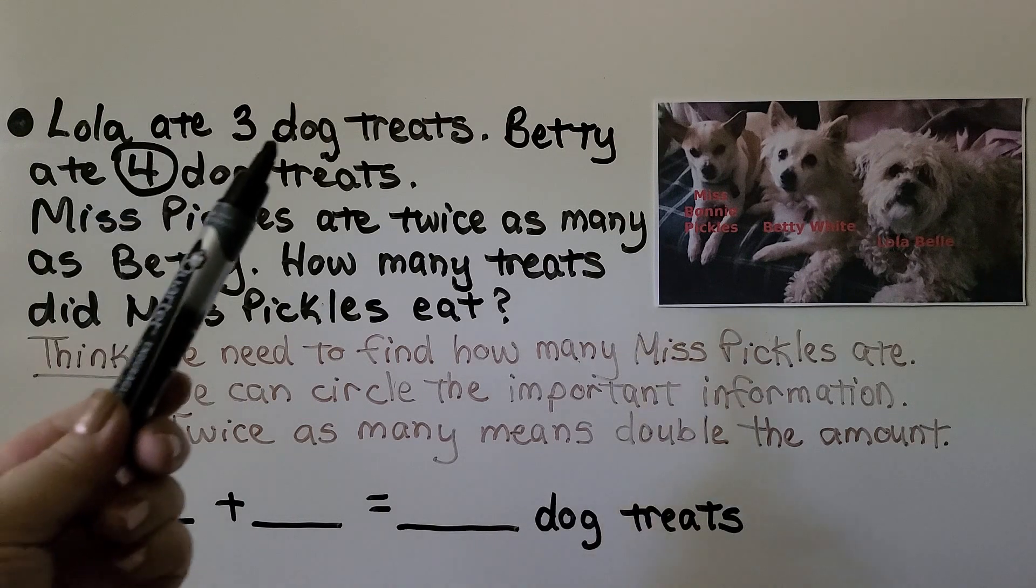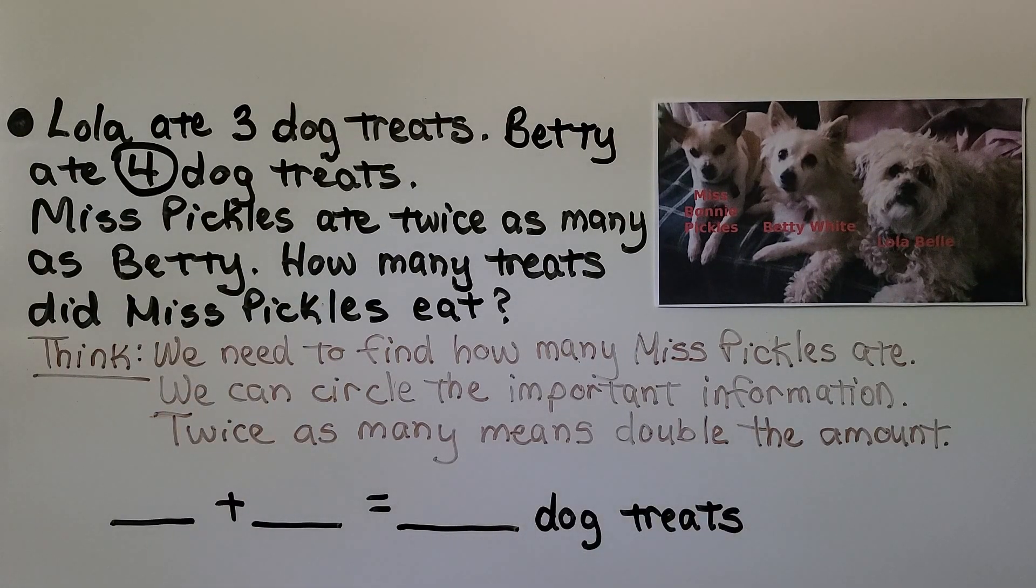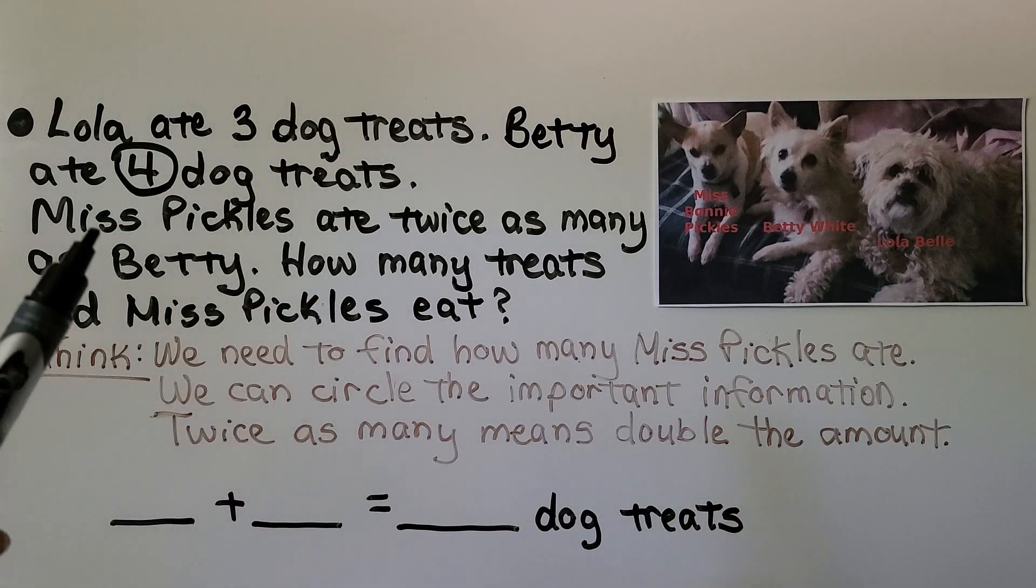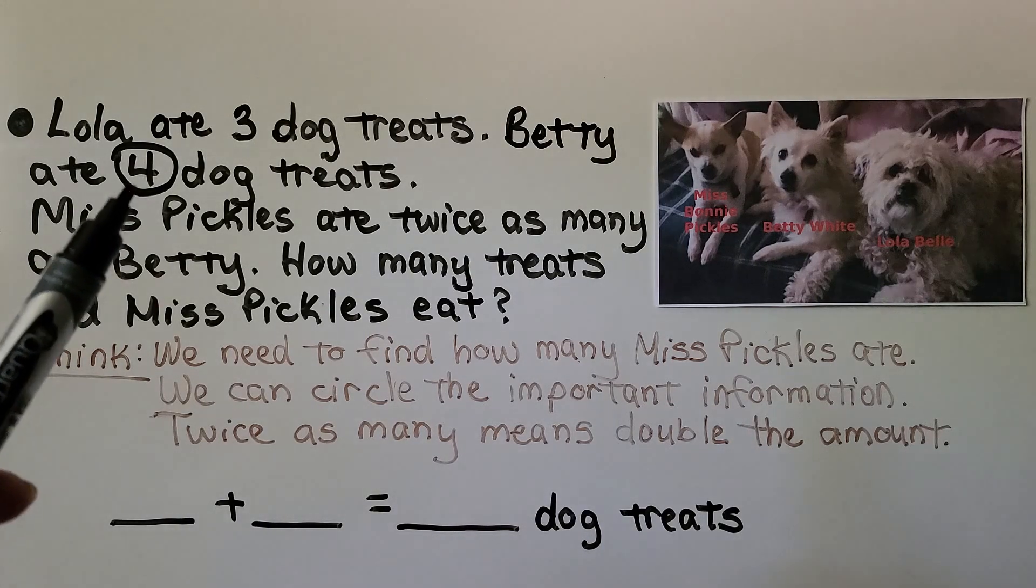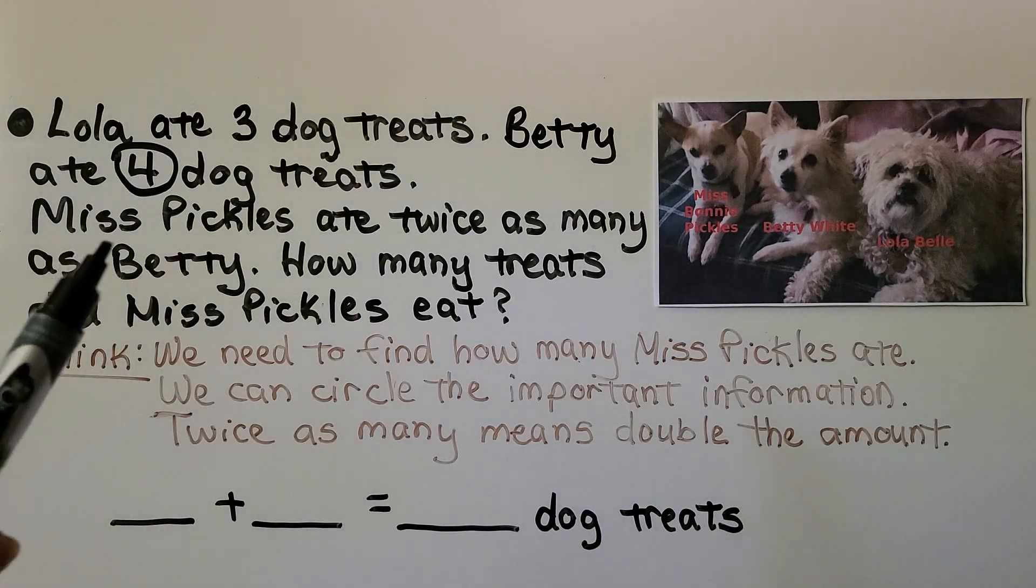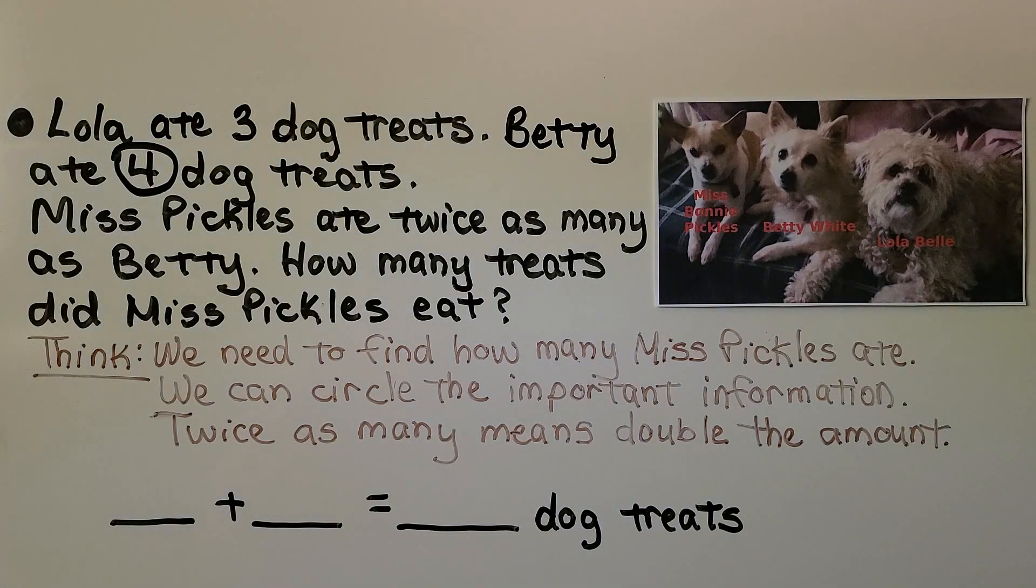That means Miss Pickles ate twice as many as 4. Is it important that Lola ate 3? No, it's not. It's only important that Betty ate 4 and Miss Pickles ate twice as many as Betty. Twice as many means double the amount.